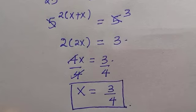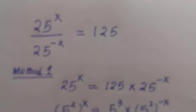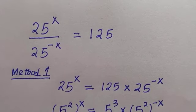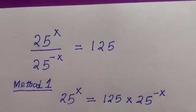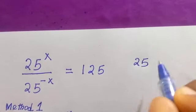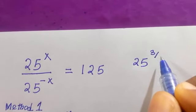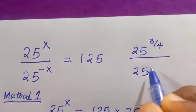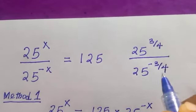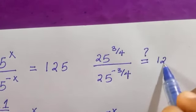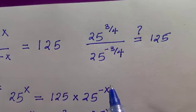Since x equals 3 over 4 is our solution, let's verify it in the original problem. We substitute x equals 3 divided by 4, giving 25 raised to power 3 over 4, divided by 25 raised to power minus 3 over 4, and we want to check if this equals 125. We will work with the left-hand side only.